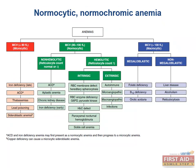Now we'll discuss the normal-sized anemias. The normocytic normochromic anemias may be classified as either hemolytic or non-hemolytic. Hemolytic anemias can be further classified into extrinsic, if the cause of the hemolysis is due to something outside the RBC, or intrinsic, if the cause of the hemolysis is a problem with the RBC itself. The hemolytic anemias can also be classified as either intravascular or extravascular, depending on the location of the hemolysis.